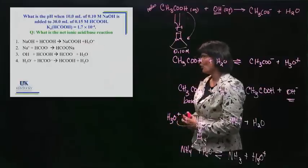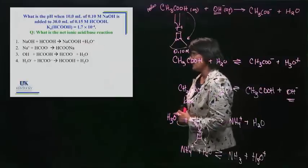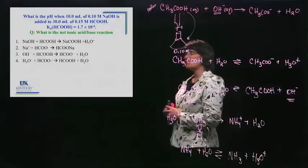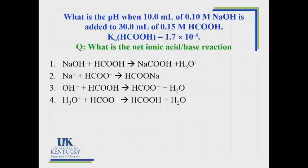Before we work this problem, let's look at the problem itself. We have 10 milliliters of sodium hydroxide — that's a strong base — reacting with formic acid (HCOOH), which is a weak acid. So we've got that. We need to start with the one-way reaction. Figure out which one of those is the net ionic equation — that means the spectator ions are left out. The most challenging step for students is getting started.